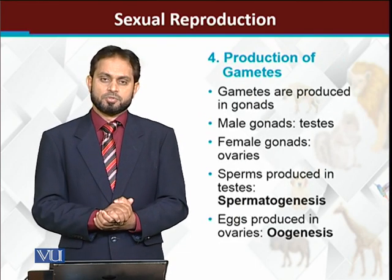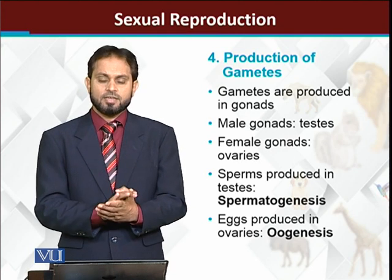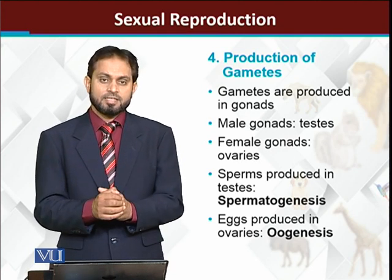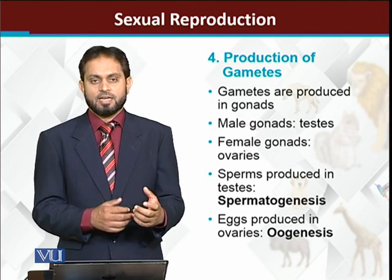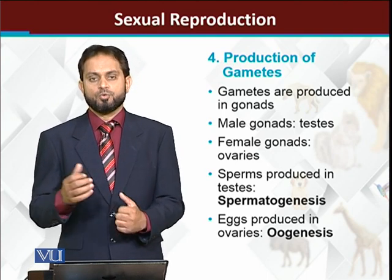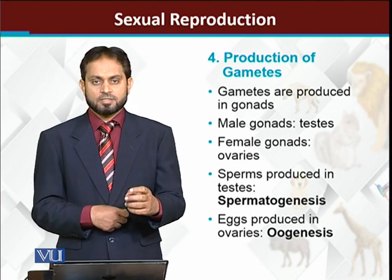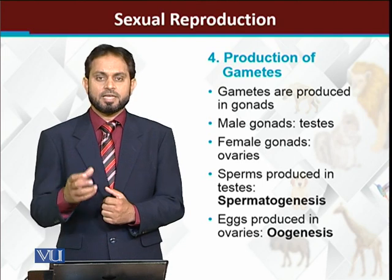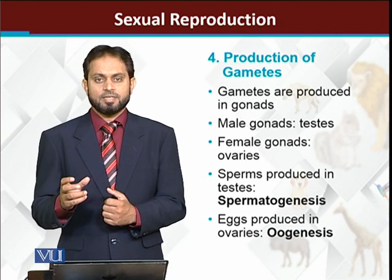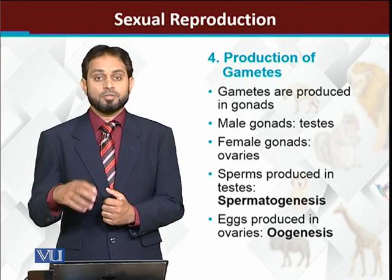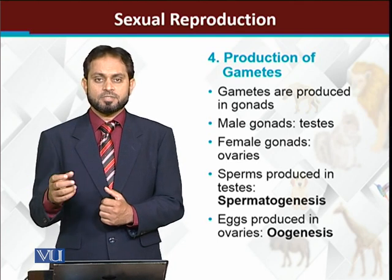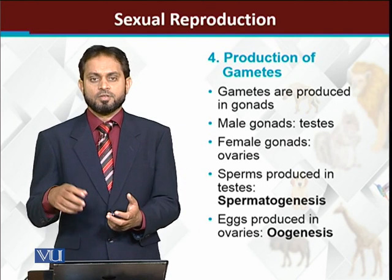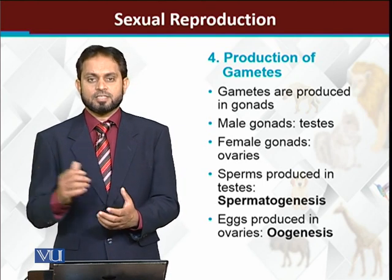So how are the gametes produced? Gametes are normally produced inside the gonads. Male gametes are produced in the male gonads, and female gametes are produced in the female gonads. Male gametes are sperms and male gonads are called the testes. Similarly, female gametes are the eggs and female gonads are the ovaries. So sperms are produced in the testes and eggs are produced in the ovaries.